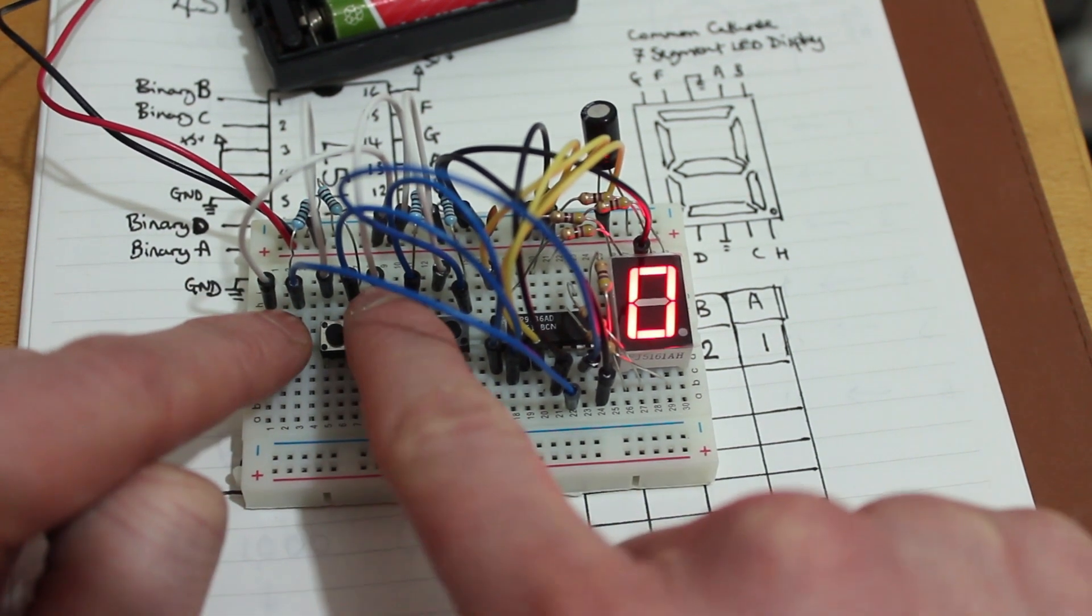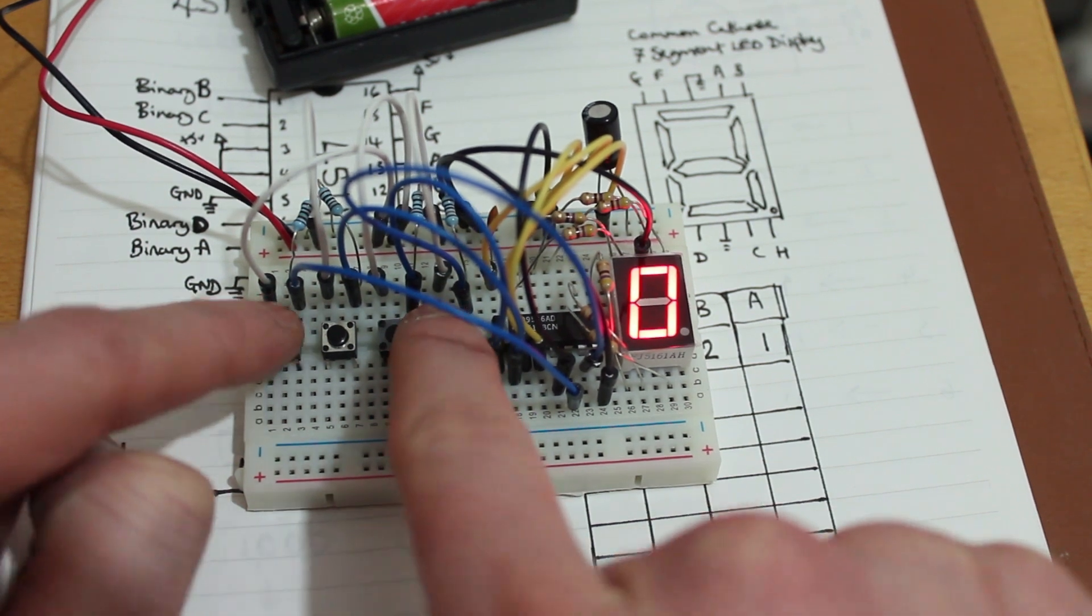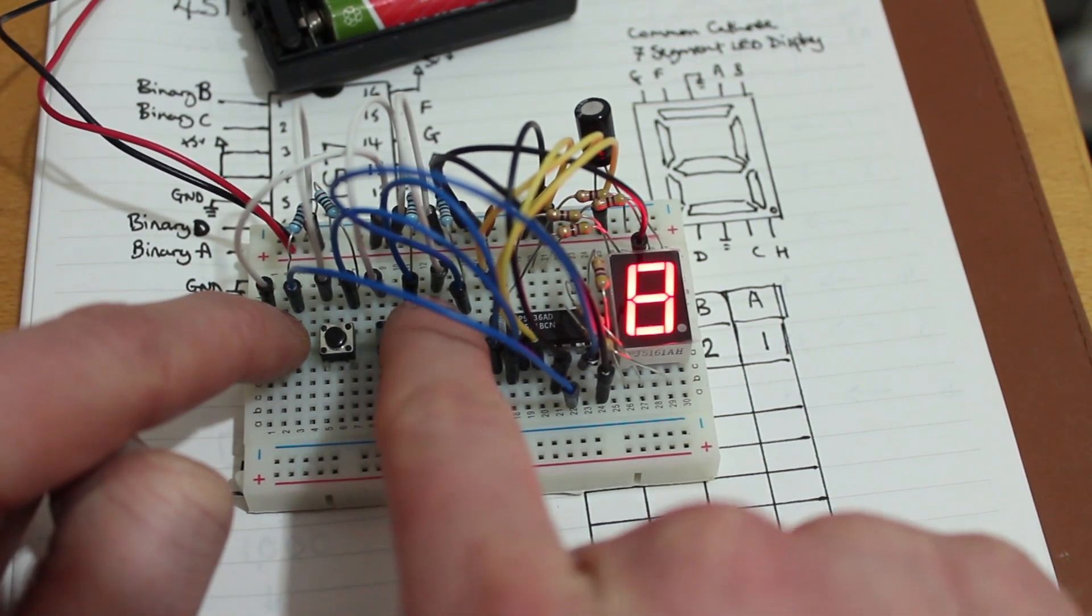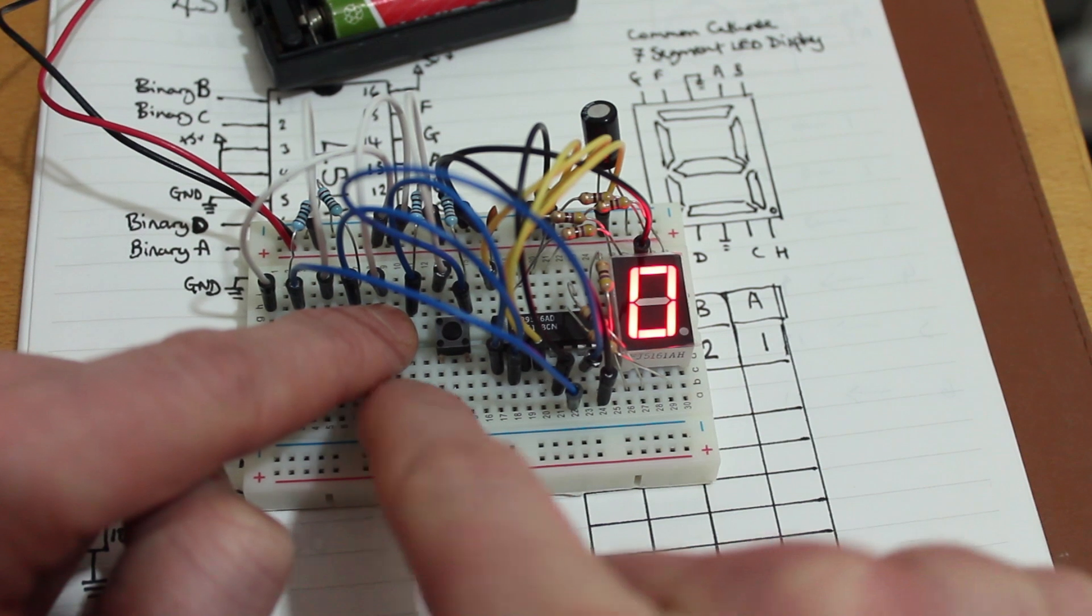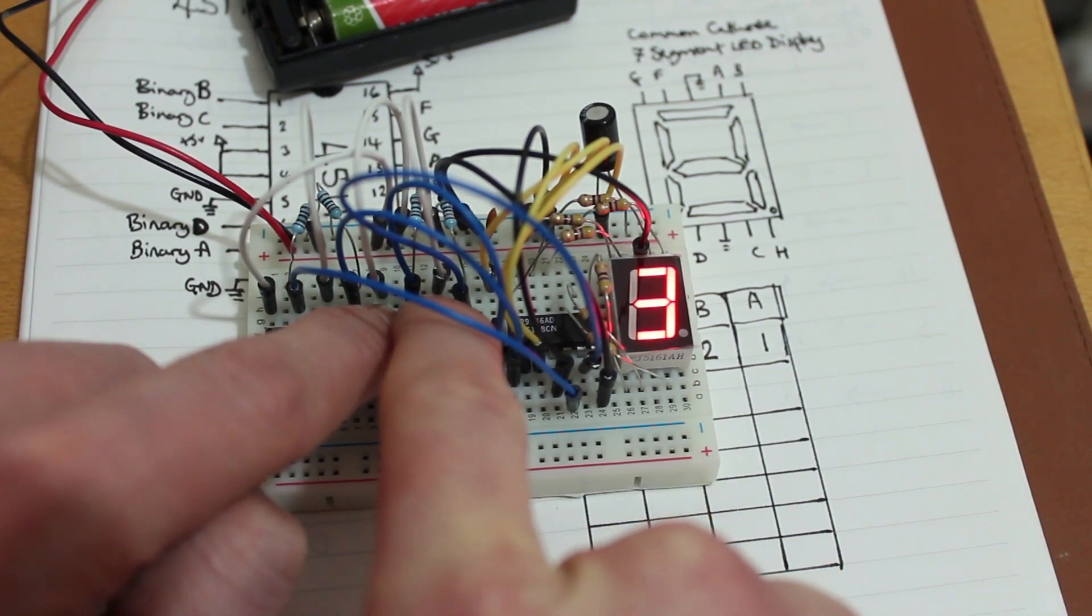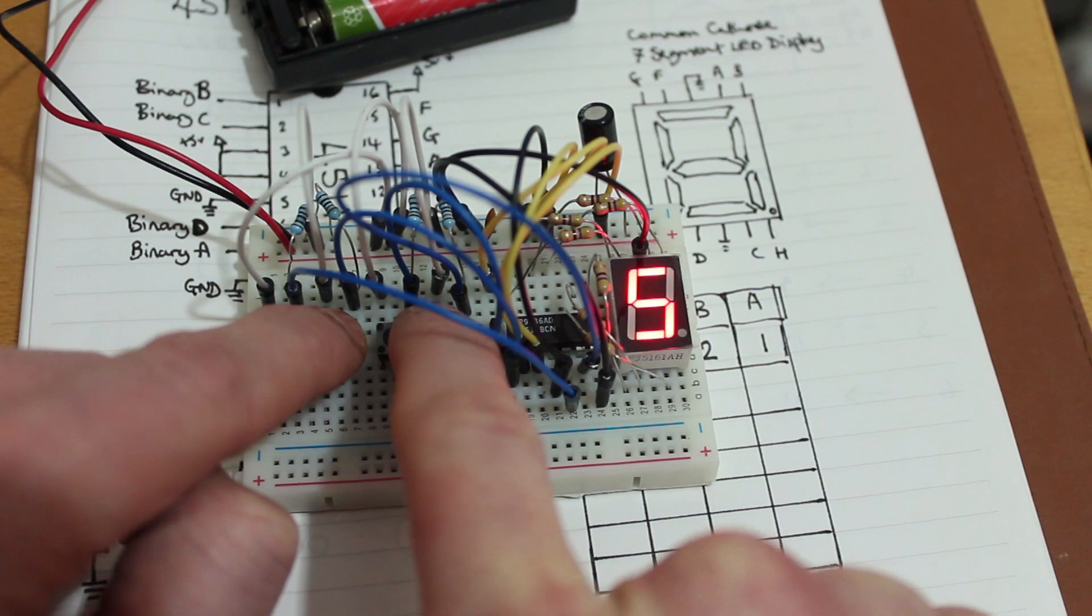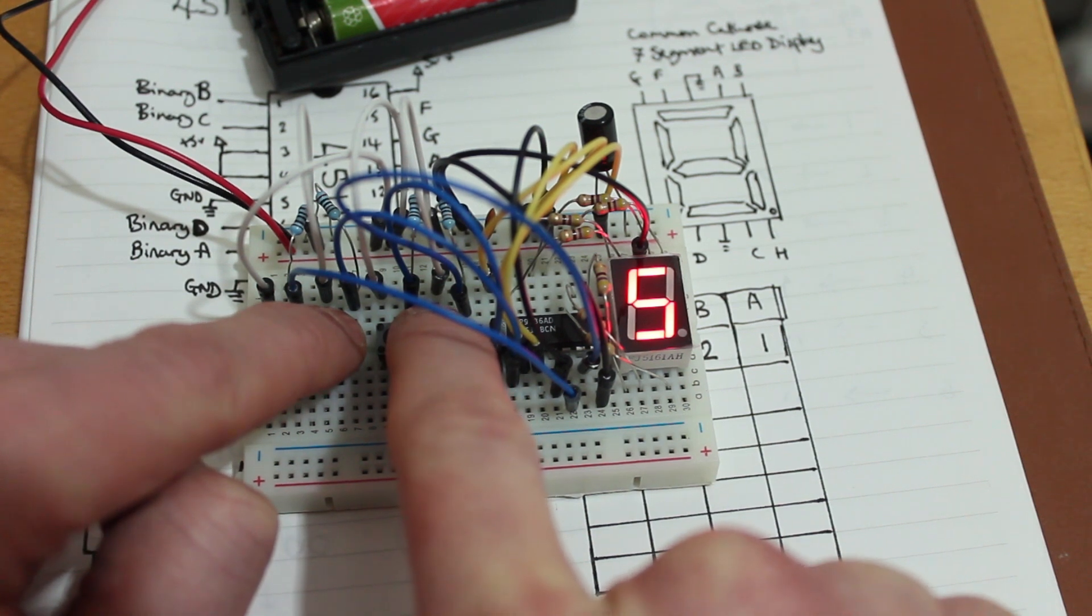But we can combine these together. So let's say we wanted to have a 9. So we have our 8 there. We just press the first binary decimal to give ourselves a 9. Similarly, if we keep that one pressed and then press the second one, we get 3. We can then switch over to another one, the number 4, and get 5.